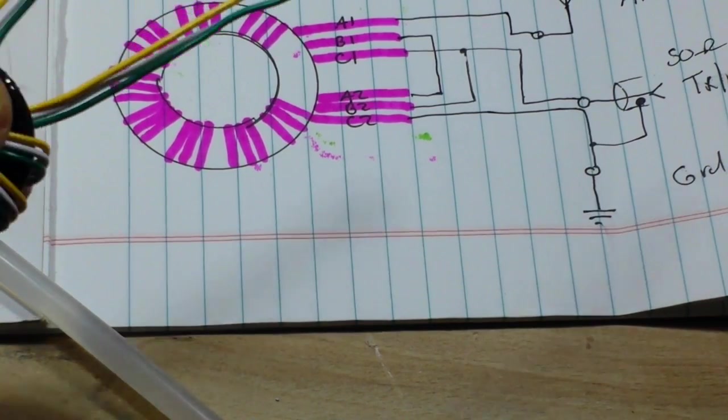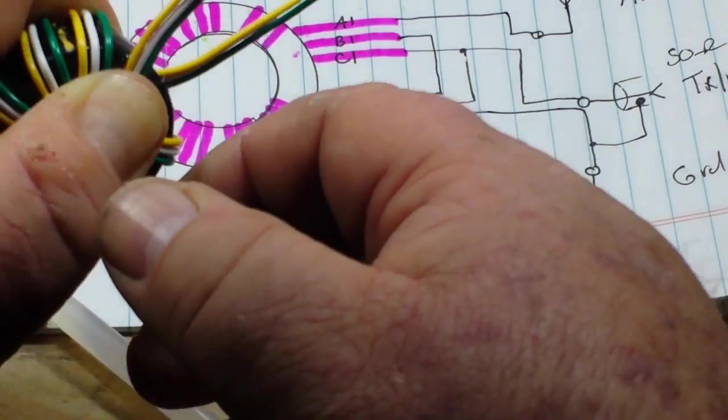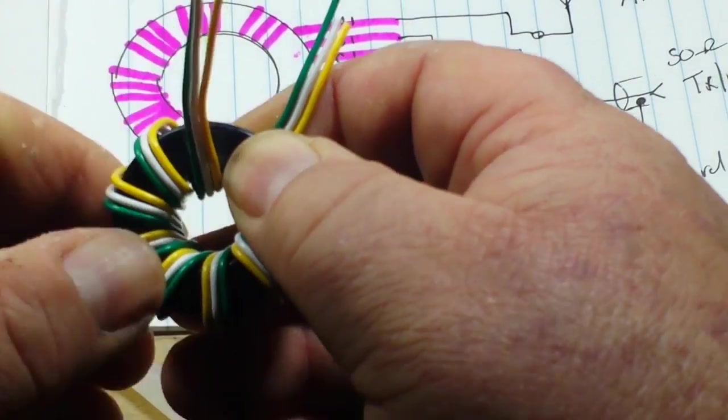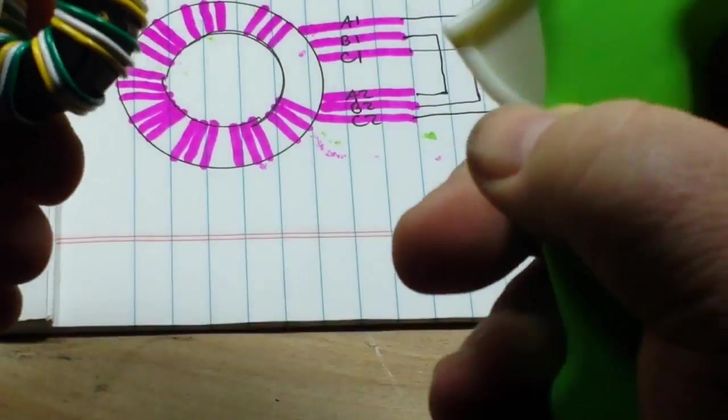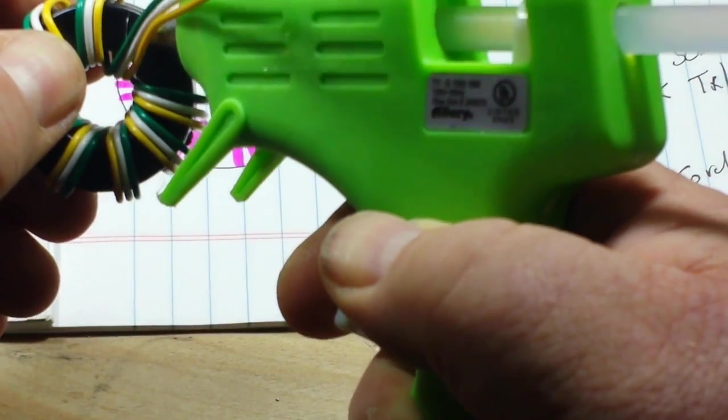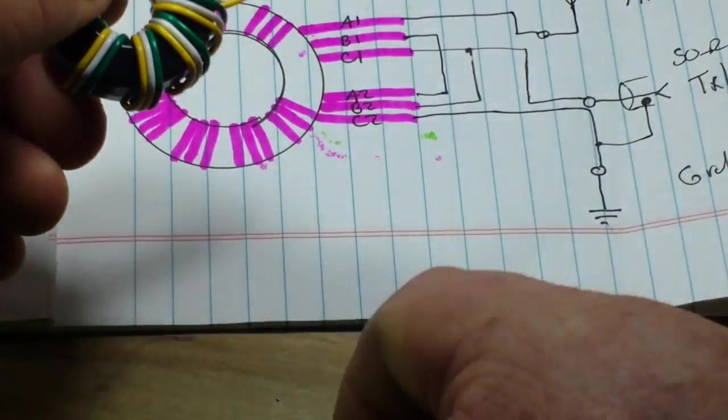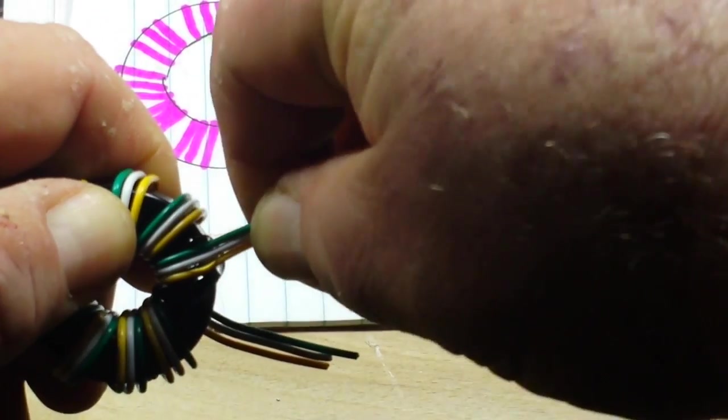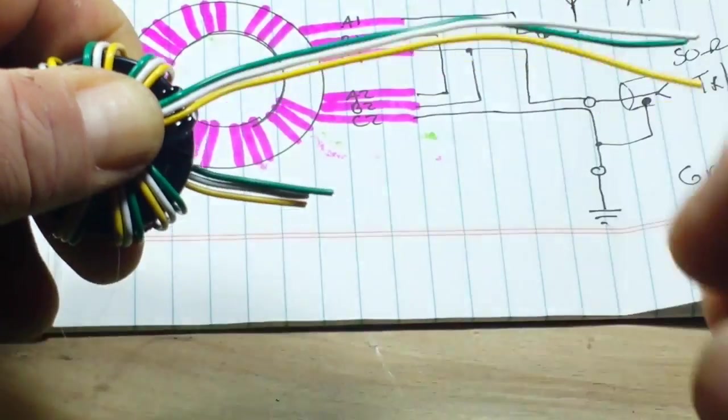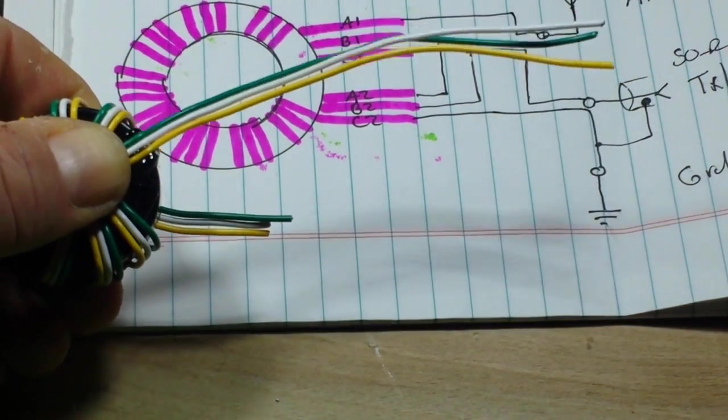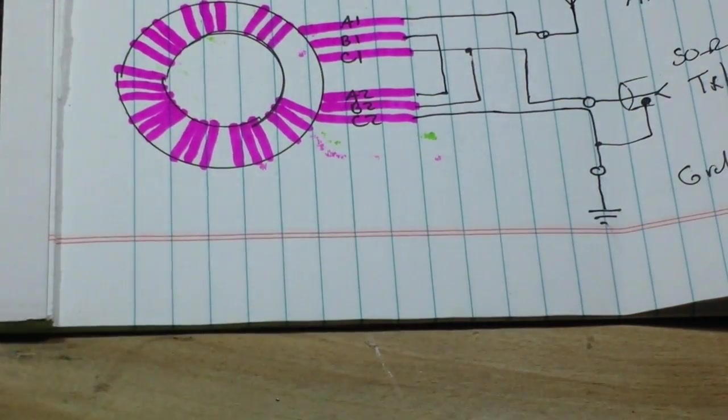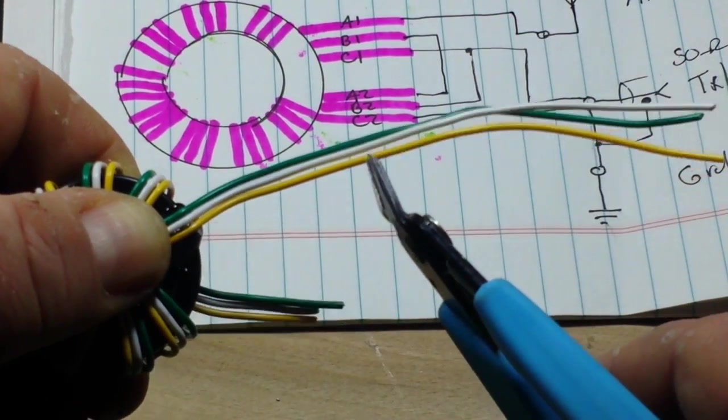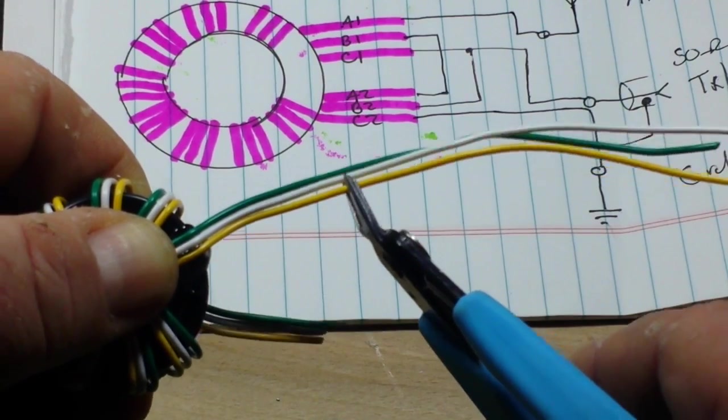So 22 gauge wire—I'm just putting some hot glue on here to hold everything in place—22 gauge wire is not going to be good for 100 watts of output, probably good for about 20 to 30 watts of output power, which is all I intend to use this with. So my size should be fine.